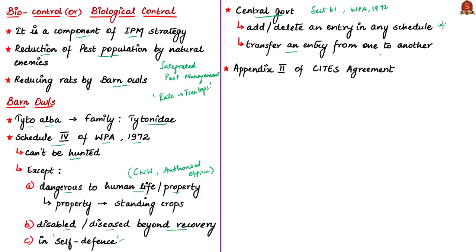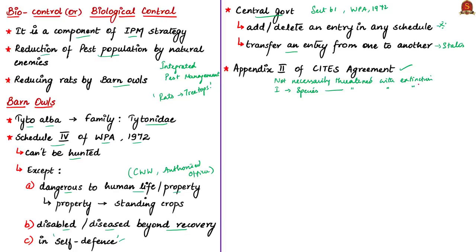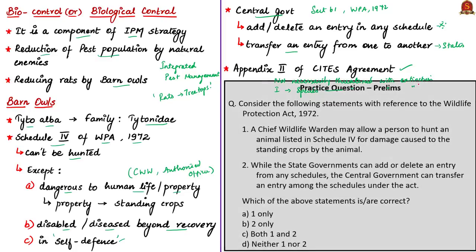Barn owls are also protected under controlled trade under Appendix II of the CITES Agreement. Appendix II of CITES includes species that are not necessarily threatened with extinction but in which trade must be controlled to avoid utilization that makes it incompatible or unsustainable for their survival. Note that Appendix I of CITES includes species threatened with extinction.